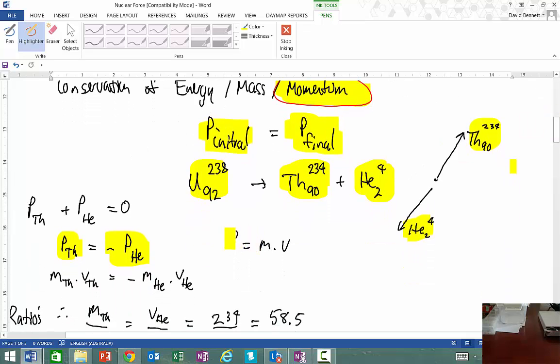So we know momentum is equal to the mass times the velocity. So when we start looking at this, then we know that the mass of the thorium and the velocity of the thorium has to be equal to the mass of the helium and the velocity of the helium, but in opposite directions. And that's what the minus represents.